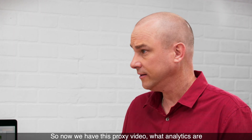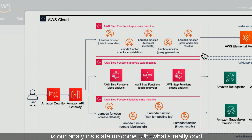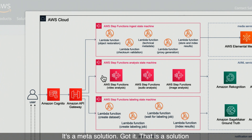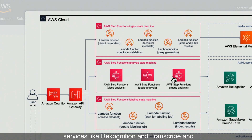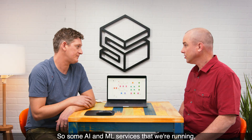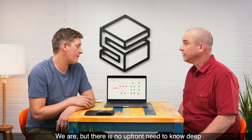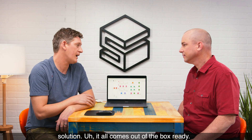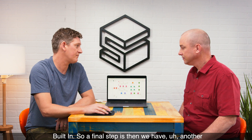Now we have this proxy video. What analytics are run on it? The next step is our analytics state machine. What's really cool about this solution is that it's actually the Media Analysis solution that has been plugged into Media2Cloud — we're using our own solution within the solution, a meta solution. That solution will ingest your video, take that, and pass it to services like Rekognition, Transcribe, and Comprehend to get meaningful information back about that content. There is no upfront need to have a deep understanding of machine learning to use this solution — it all comes out of the box ready to go, built in.